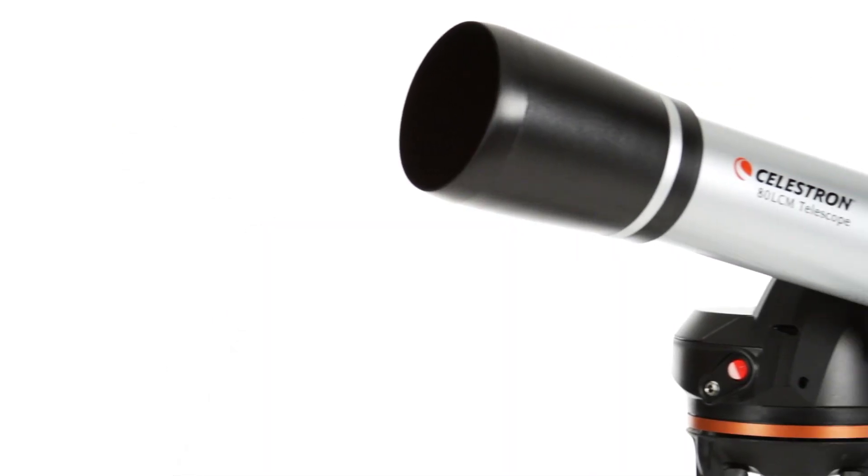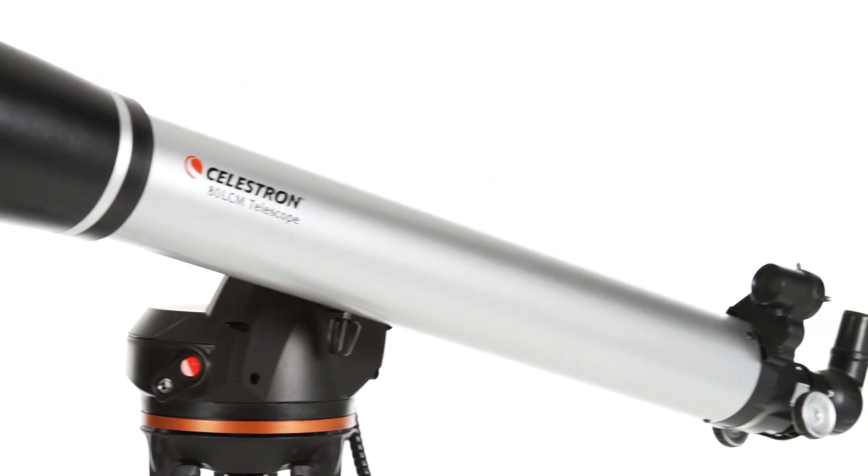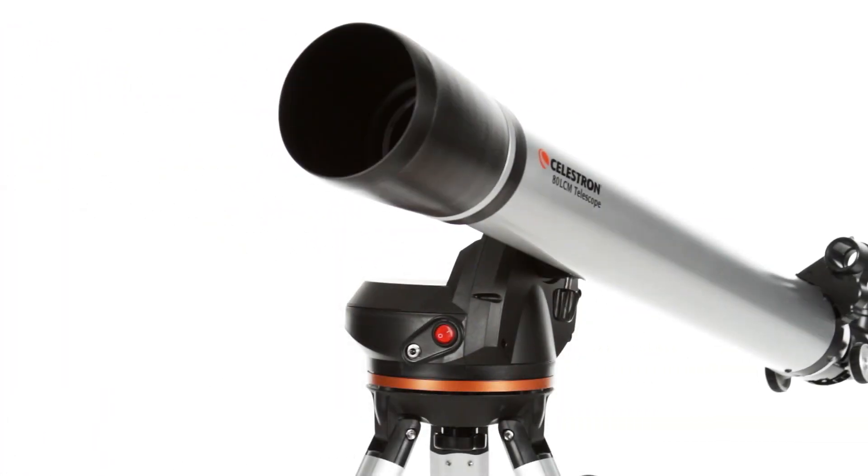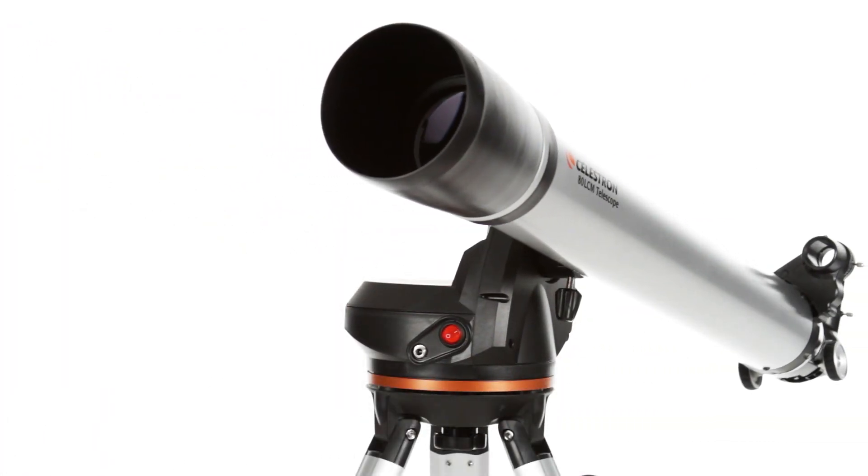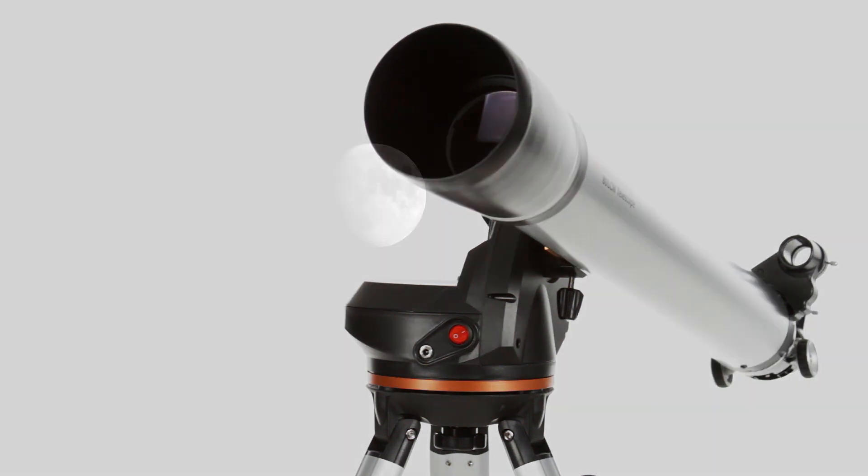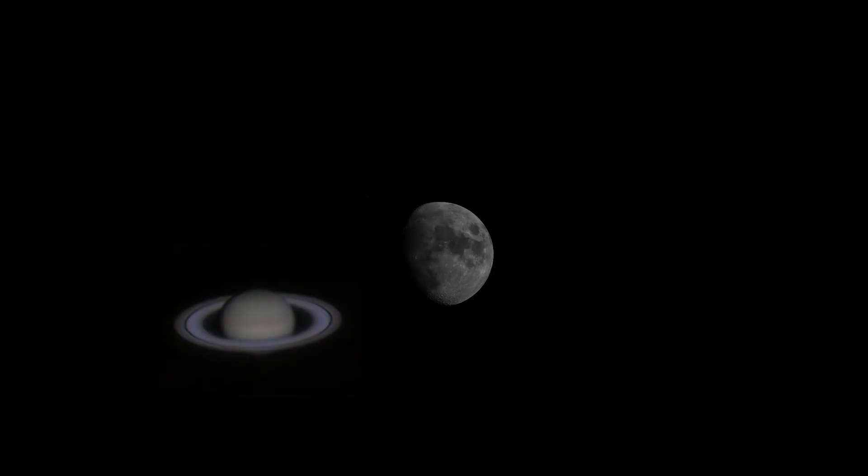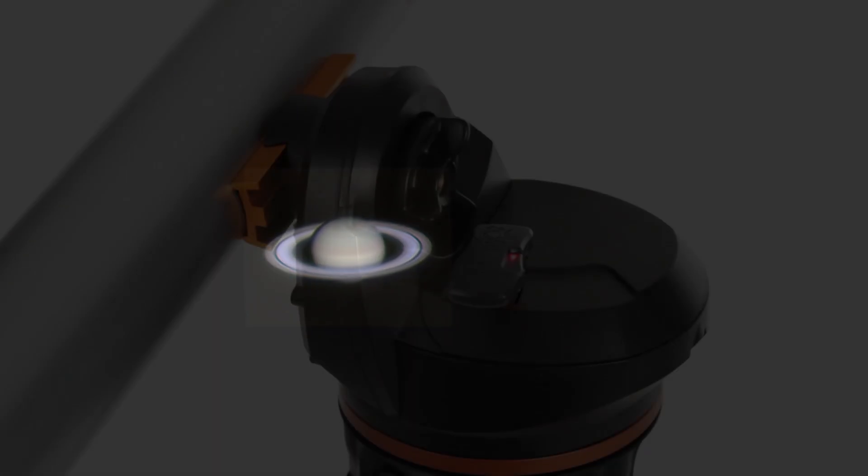The 80 LCM's classic refractor optical design features an 80mm lens. With this much aperture, you'll be able to view the best celestial objects in the solar system and beyond. Take your 80 LCM to a dark sky site, and you can even view fainter objects like the Andromeda Galaxy and nebulae.